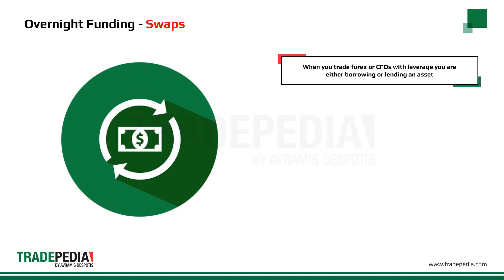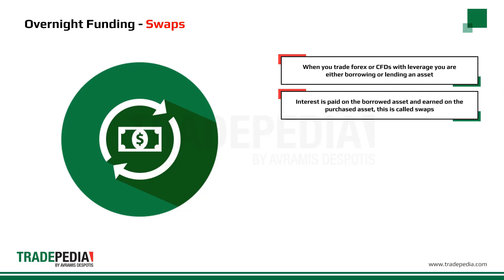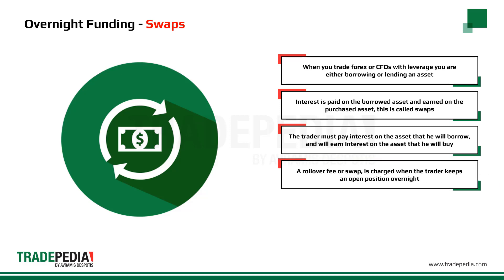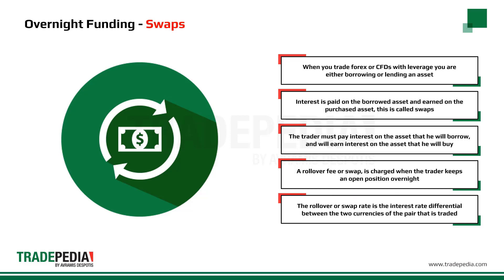When you trade Forex or CFDs with leverage, you are either borrowing or lending an asset. For this reason, interest is paid on the borrowed asset and earned on the purchased asset — this is called swaps. As a result, the trader must pay interest on the asset that he borrows and will earn interest on the asset that he buys. A rollover fee, or swap, is charged when the trader keeps an open position overnight. The rollover or swap rate is the interest rate differential between the two currencies of the pair that is traded.